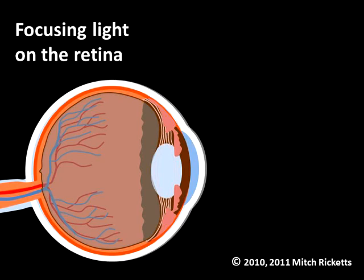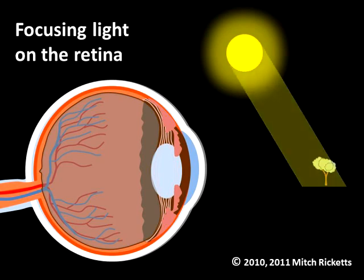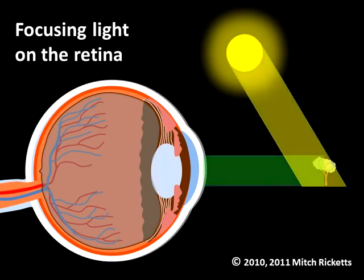For the eye to resolve fine details, light rays must be properly focused on the retina. Let's imagine we are outdoors looking at a tree that is far away. Light from the sun is reflected off the tree. If we face the tree, that reflected light travels toward our eye. Incoming light first passes through the cornea, the clear bulge at the front of the eye. The cornea bends incoming light rays to help focus the image.